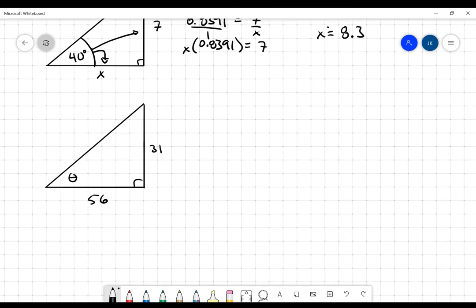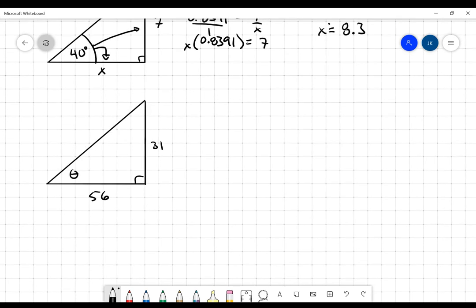The last type of question that I can get related to tangent will be a question that looks like this, where I've got this angle right here but I don't know what it is. Once I've got my attention on that angle, that tells me that the 31 is the opposite side and the 56 is my adjacent side. I'm looking for that angle. I know that its tangent is going to be 31 over 56.